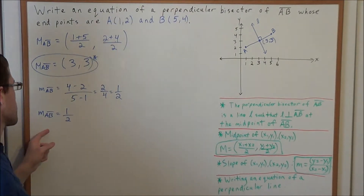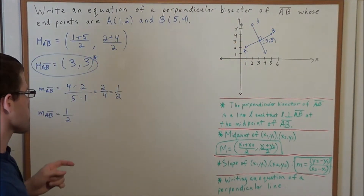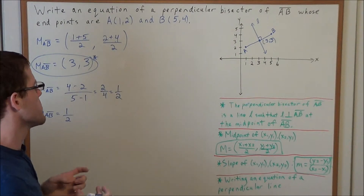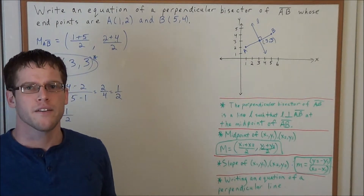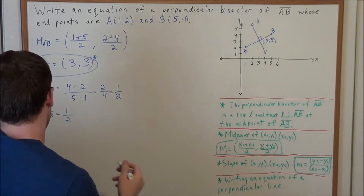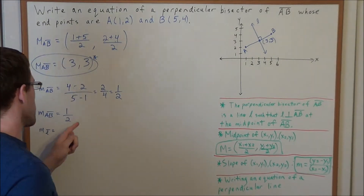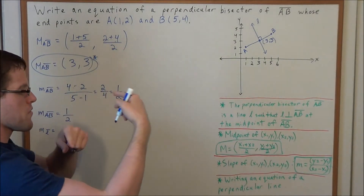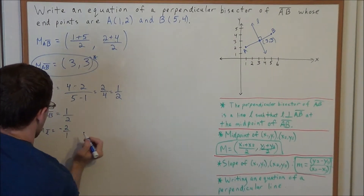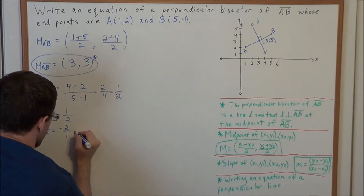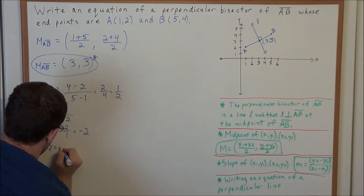Now, how is this going to help us find the slope of line L? There's a theorem involving perpendicular lines that says perpendicular lines have slopes that are negative reciprocals of each other. So we need to take the negative reciprocal of 1/2: we flip 1/2 to get 2/1, and then negate it. So the slope of line L is negative 2.